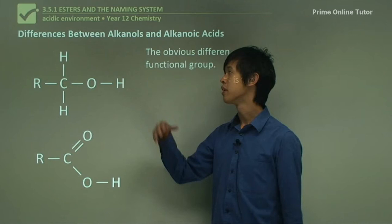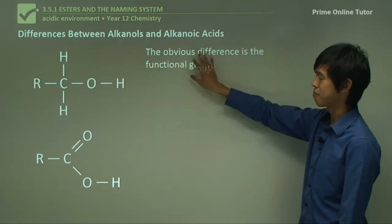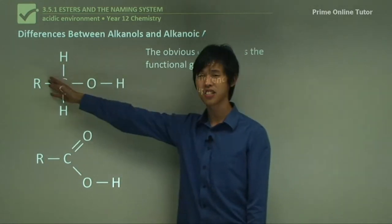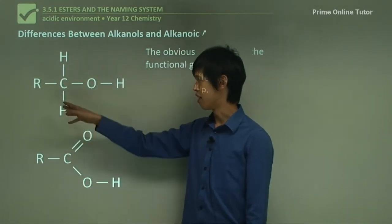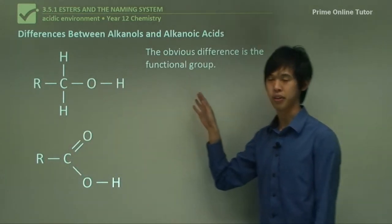Here we have a comparison of the two. The differences between alkanols and alkanoic acids. The main difference is the functional group. These R's could be identical, but obviously they'll still have very different properties if you've got a different functional group.